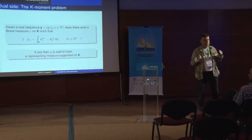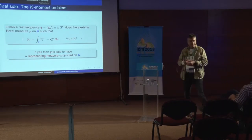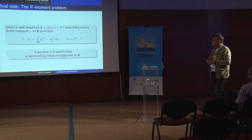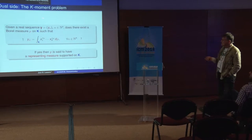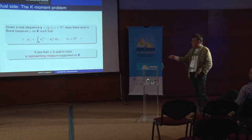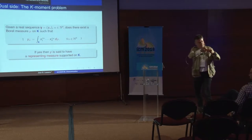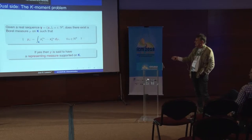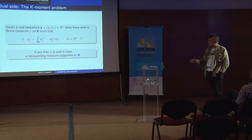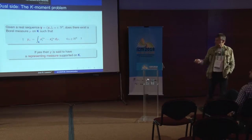This theorem comes with two facets: one algebraic facet just presented, and a dual facet related to functional analysis — the so-called K-moment problem. With the same set K, given a real sequence of numbers indexed by multi-index alpha, the question is: can you say whether these numbers are the moments of some measure mu supported on K? This is the K-moment problem: given the sequence Y_alpha, can you write Y_alpha as the alpha-th moment of some measure mu on K? If so, Y is said to have a representing measure.